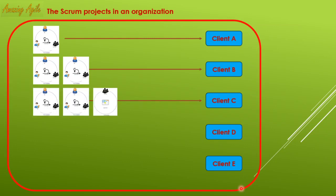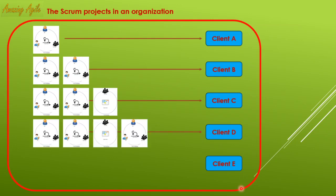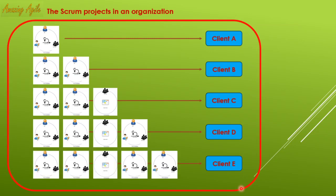Client C has three projects — two scrum and one Kanban — which is manageable, similar to client B. In the case of client D, there are four projects, roughly forty people at least, and two or three scrum masters and product owners. Managing this is a little difficult because of coordination across four different projects with four different timelines, so you have to be extra careful. For client E with five projects and more than fifty people, you have to do something — otherwise it is difficult to manage.